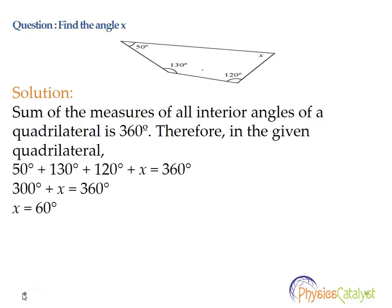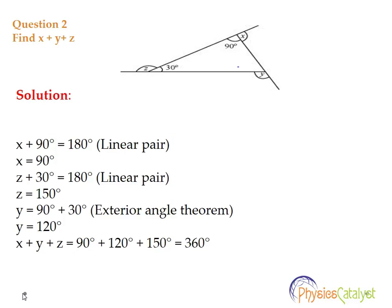That was a simple problem. Just need to remember that the sum of measures of all interior angles of a quadrilateral is 360 degrees. Problem number two: We need to find the value of X plus Y plus Z, where X, Y, Z are the exterior angles in the below diagram.